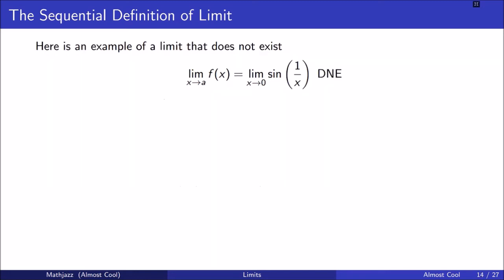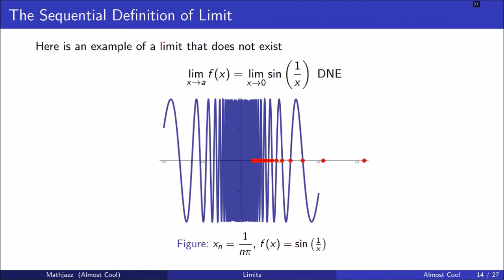Here's an example of a limit that does not exist. We're going to give two sequences that both converge to zero and show that f of each of these sequences converges to a different number. We're going to say the limit as x goes to zero of sine of 1 over x does not exist because there is no number l such that every sequence converging to zero is taken to a sequence that converges to l. I've picked the sequence x sub n equals 1 over n pi. When I take f(x sub n) I get sine of 1 over (1 over n pi), but 1 over a fraction is just the reciprocal, so I get sine of n pi, and sine of multiples of pi are zero.